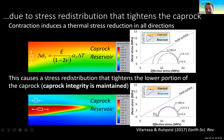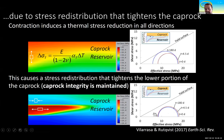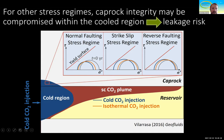Looking at the Mohr circles to better understand what is happening: in the storage formation, the thermal reduction in horizontal stress brings the stress state to failure conditions. But in the caprock, due to the increase in horizontal total stresses, the deviatoric stress decreases, and as a result we maintain stability in the cap.